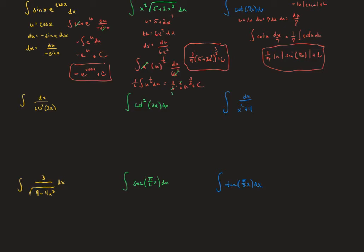For the next example, we recognize that 1 over cosine squared is secant squared of 2x. We let u equal 2x, so du is 2 dx and dx is du over 2. The integral becomes 1 half times the integral of secant squared u du, which equals 1 half times the tangent of u — that is, the tangent of 2x plus c.